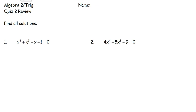Alright, today's video is going to be a review for our second quiz this chapter. We're going to start off by finding all of our solutions. There are lots of different ways that you can go about this, but there are some first instincts that you should go towards. So when we look at number 1, we've got x to the 4th plus x to the 3rd minus x minus 1 equals 0. We know that the first step and the easiest step to find our solution — we should always check to see if it's possible to factor.